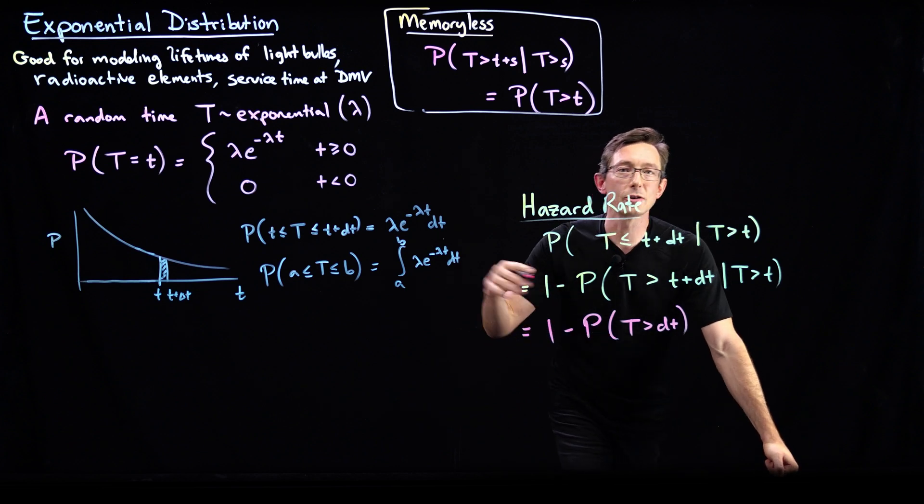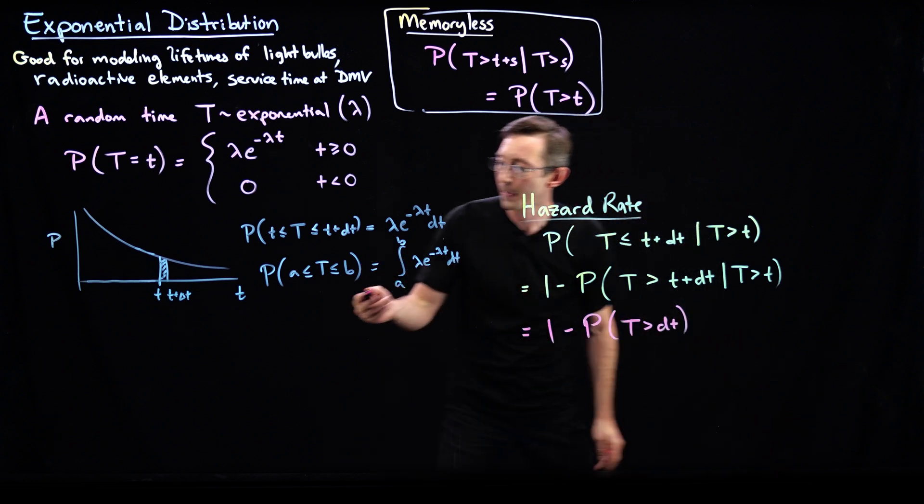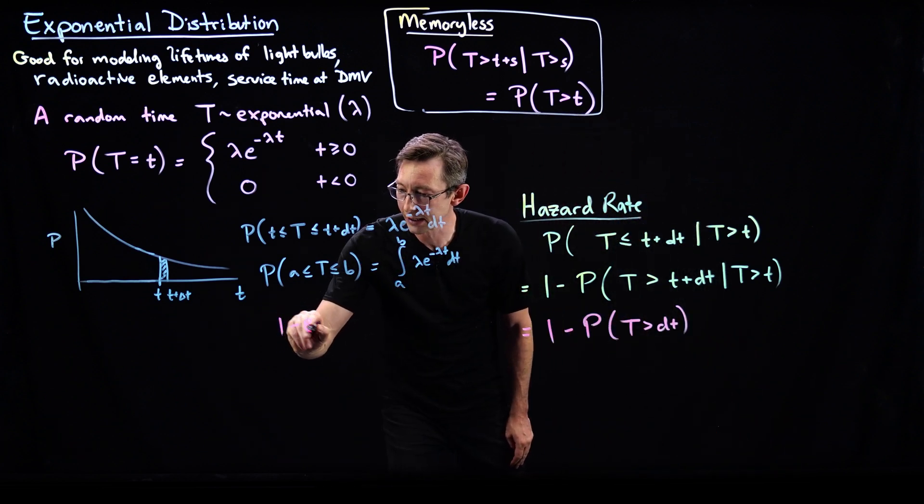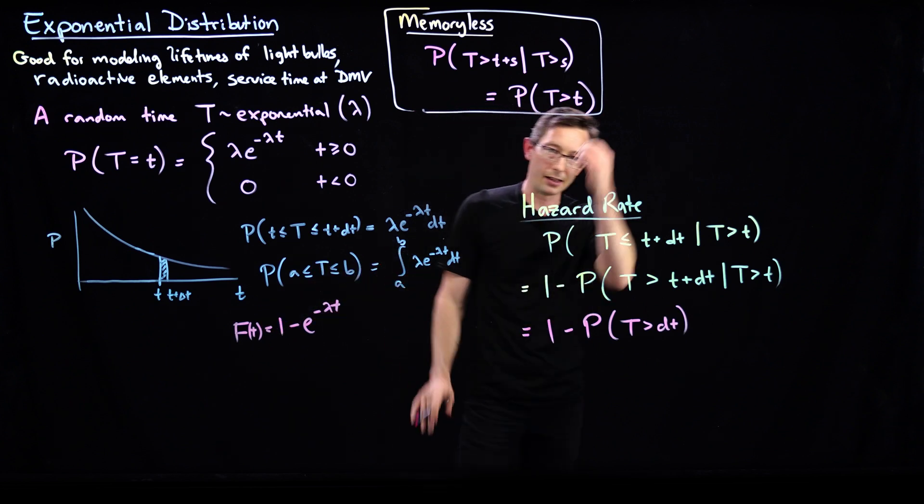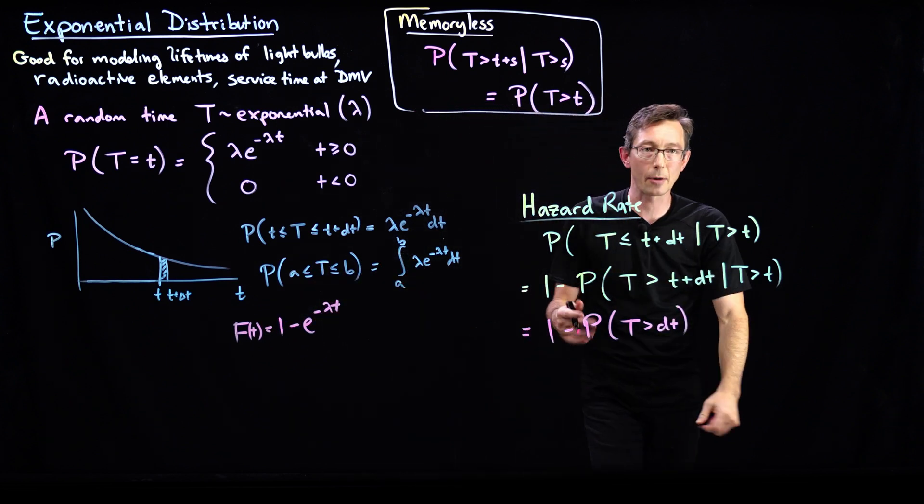And the cumulative distribution function, I wrote this down in the last lecture, but I think it's like 1 minus e to the minus lambda t, that's the CDF F of t. And that's the probability that T, this probability here.